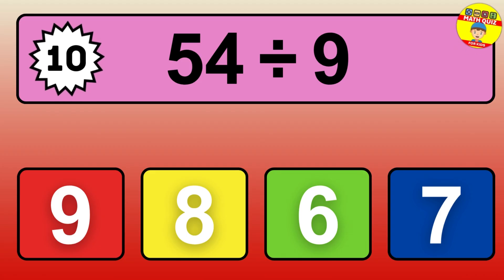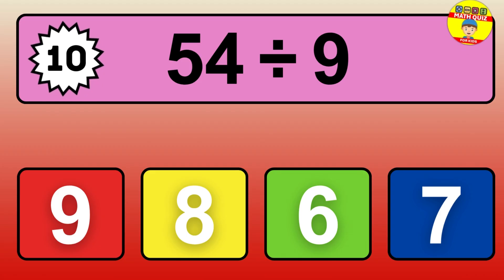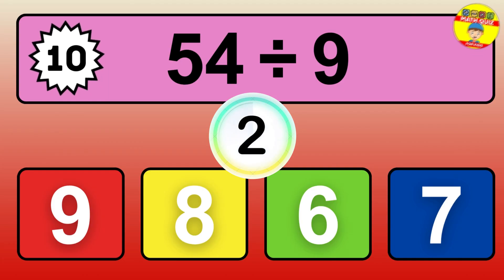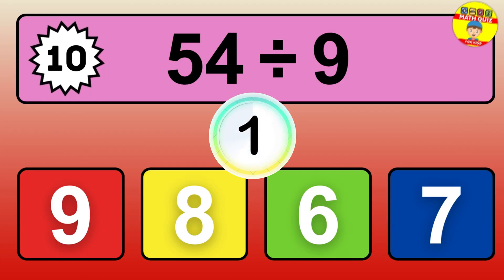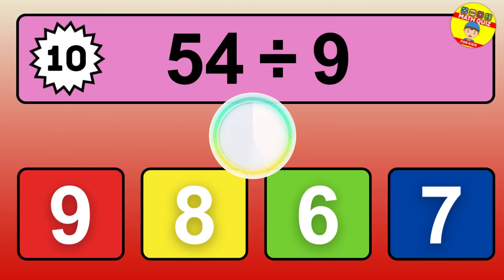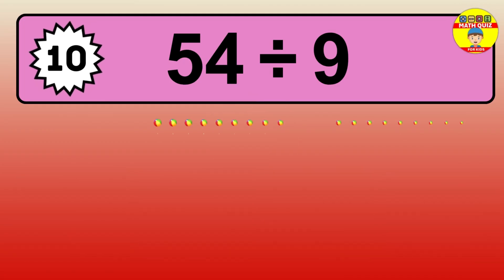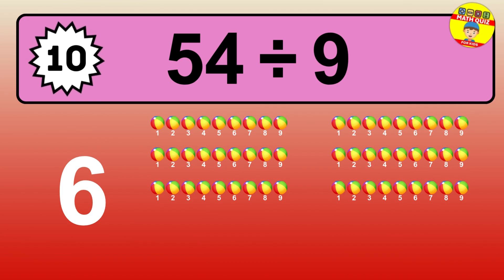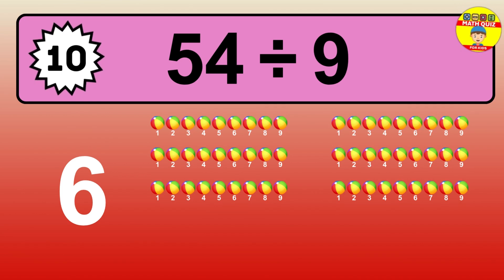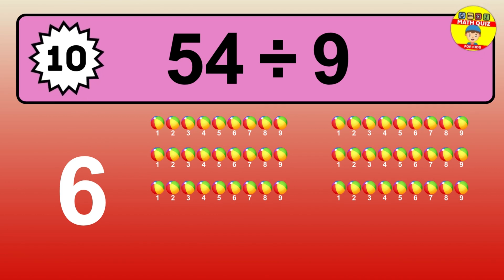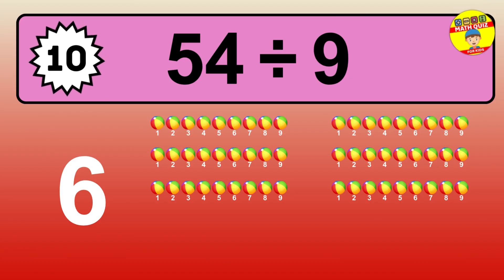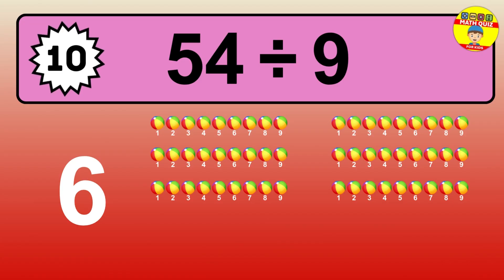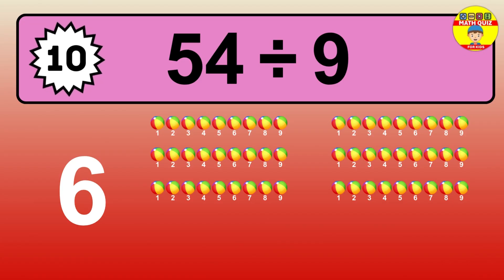32 divided by 4 — time to think. Let's go to the solution. Divide the number 32 by 4. Each group contains 4 units, so dividing 32 by 4 results in 8 equal groups. Thus, the result is 32 divided by 4 equals 8.